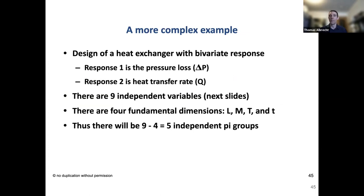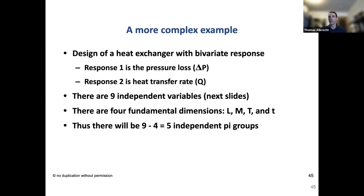The heat exchanger problem has a bivariate response: heat transfer rate and pressure loss (representing power loss — fluid pressure lost moving through the system must be replenished by a pump). We have nine independent variables and four fundamental dimensions: length, mass, temperature, and time. By the Buckingham Pi theorem, we expect nine minus four equals five independent pi groups. Acceleration due to gravity is included as an additional constant — common in DA even when it won't change during the experiment.